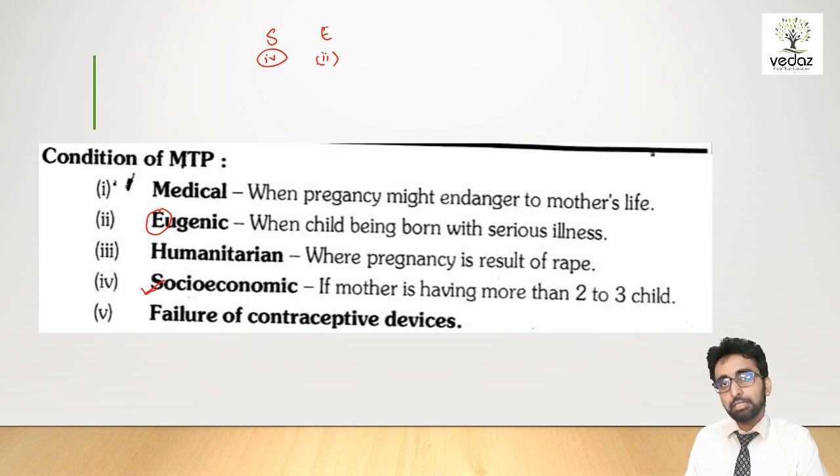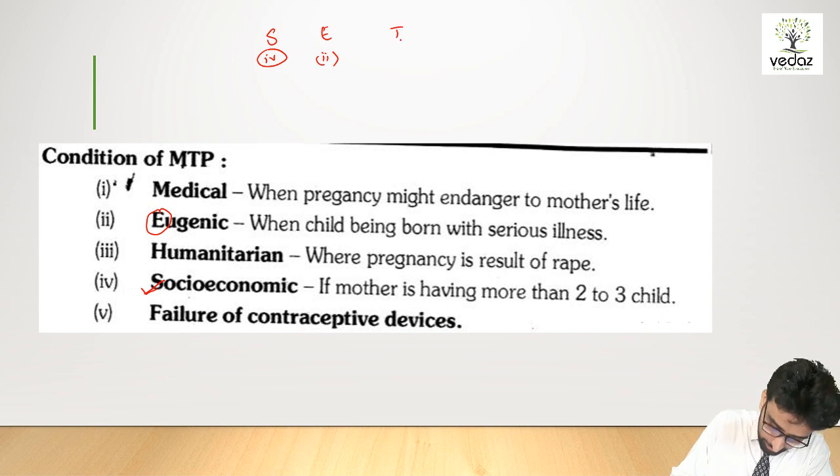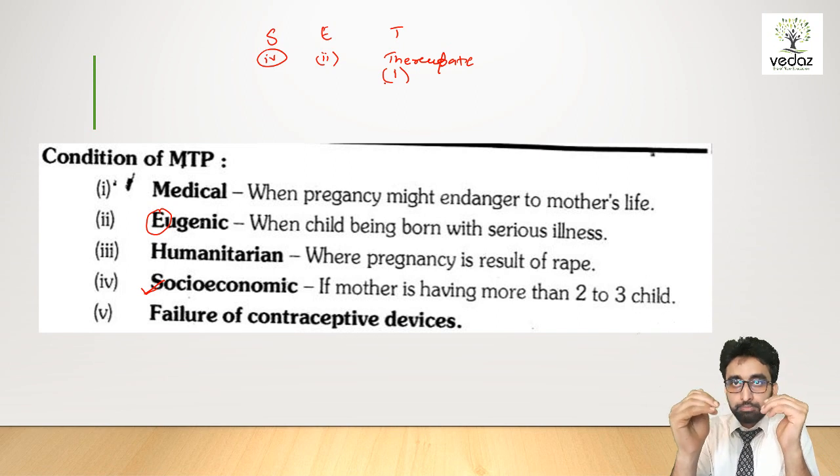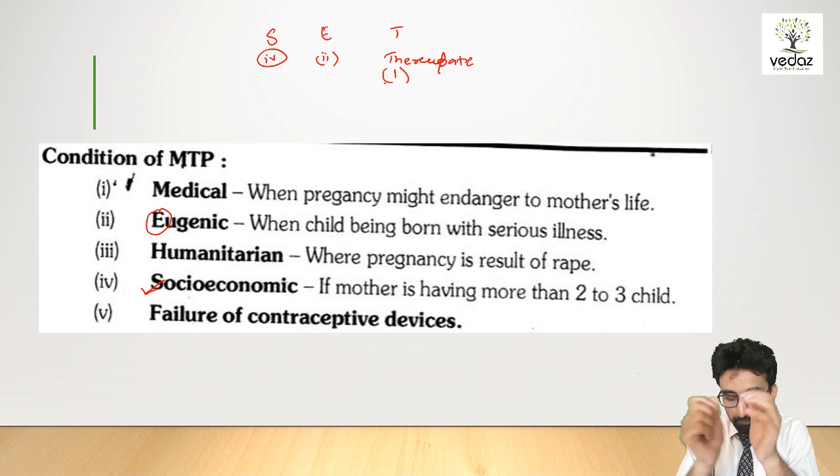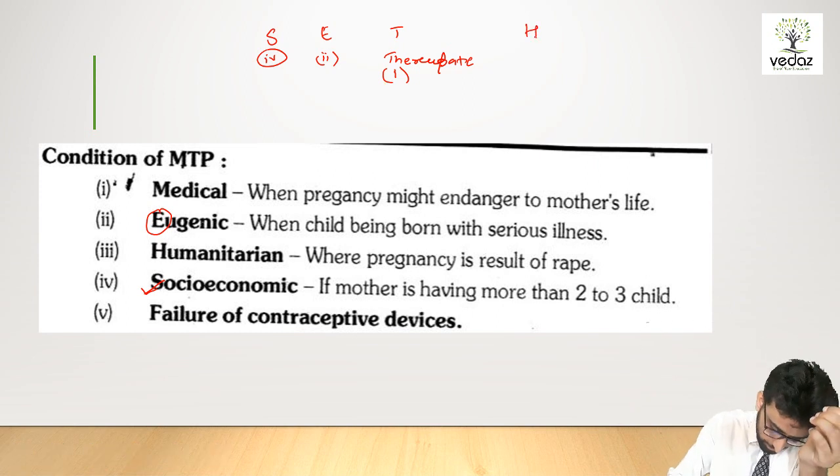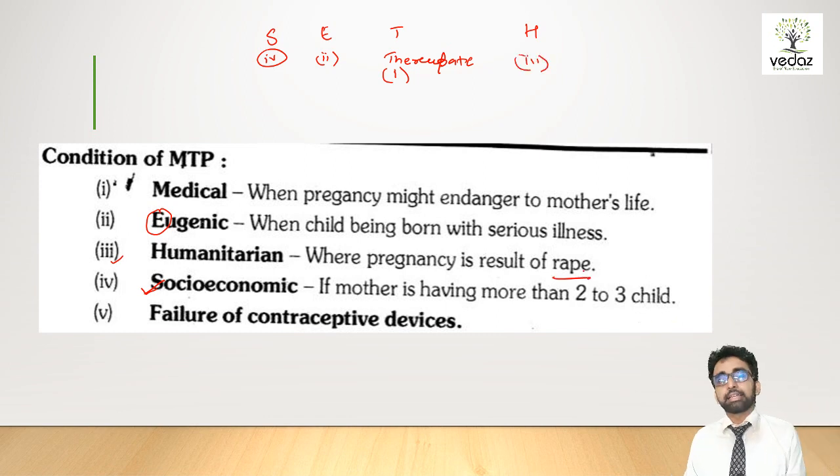If you will not terminate the pregnancy, after delivery, once the child comes out of the uterus, the child will have a miserable life. T is therapeutic, which means the mother has some serious illness, and if you continue the pregnancy, the mother's life is in danger. H is humanitarian, some human reasons like rape. One more is failure of contraceptive device. So SET is the mnemonic to remember the grounds of MTP.